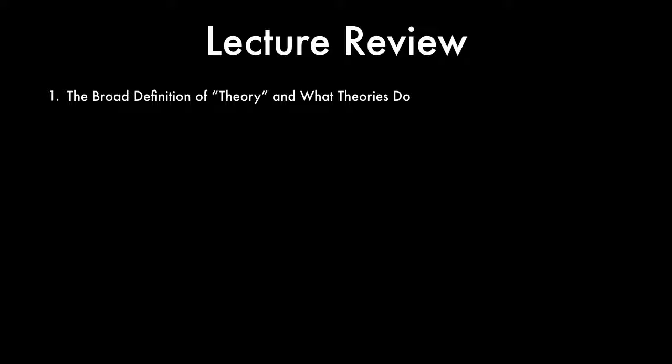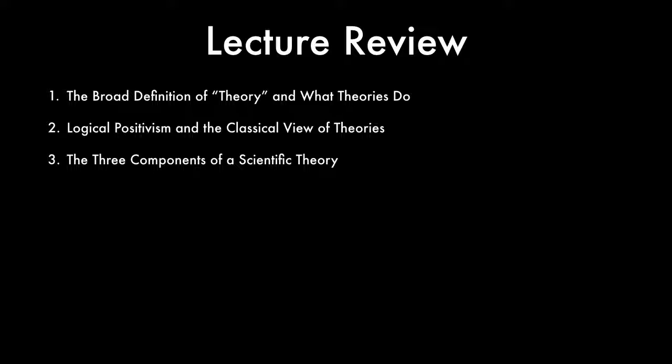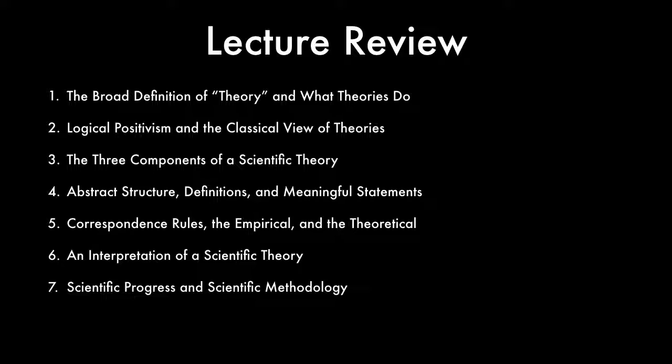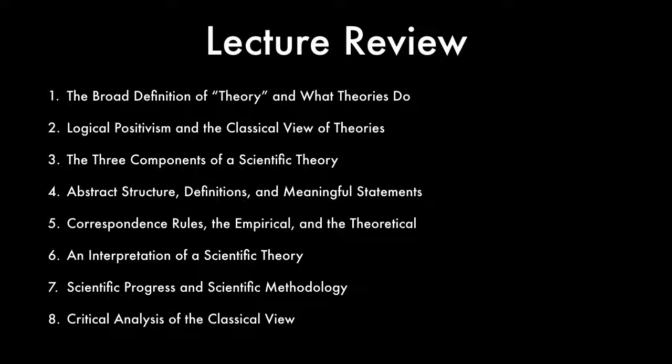In this lecture, we've examined eight topics: one, the broad definition of theory and what theories do; two, logical positivism and the classical view of theories; three, the three components of a scientific theory; four, abstract structure, definitions, and meaningful statements; five, correspondence rules, the empirical, and the theoretical; six, an interpretation of a scientific theory; seven, scientific progress and scientific methodology; and eight, critical analysis of the classical view. Thank you.